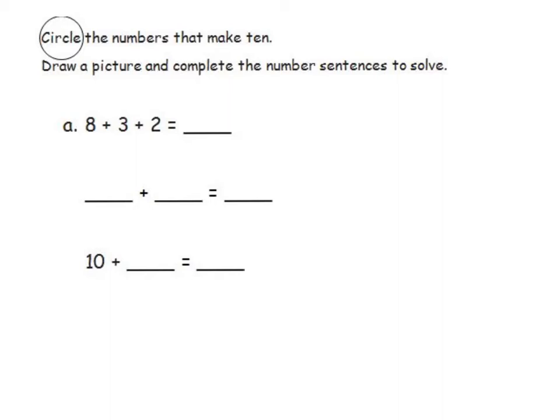To solve this problem, I will start by looking for the two numbers in the equation that make ten. Since eight and two make ten, I will place a circle around these numbers and make a number bond. So eight and two together make ten.